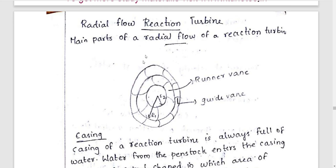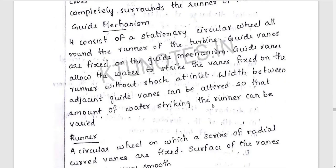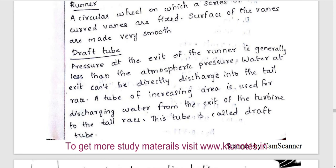Next is Radial Flow Reaction Turbine. The main parts are the runner vane and guide vane, the casing of the runner vane, and the guide vane. This is a draft tube.